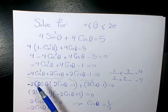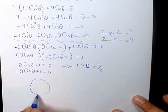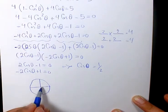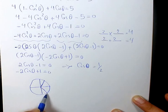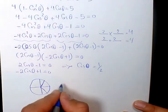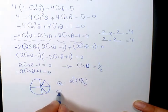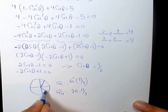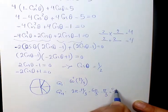Now we're looking for theta between 0 and 2 pi. Using the CAST rule, cosine is positive in quadrant 1 and quadrant 4. For cosine theta equals 1/2, the reference angle is pi over 3 or 60 degrees. The quadrant 1 answer is pi over 3. For quadrant 4, the answer is 2 pi minus pi over 3, which I rearrange as 6 pi over 3 minus pi over 3, giving 5 pi over 3.